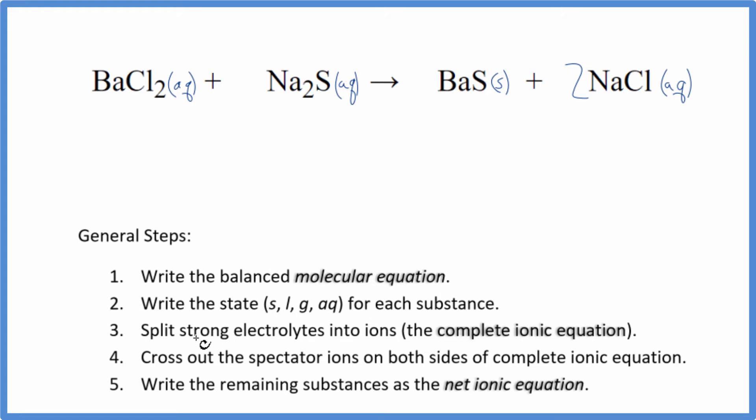So we have the states. Now we can split the strong electrolytes into their ions. That'll give us the complete ionic equation. Barium's in group 2, so that'll be 2+. So we'll have the barium ion. And I won't write aqueous each time. Let's do that at the end. Two of these chloride ions.